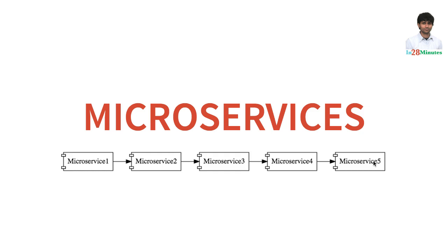He should be able to check out that this specific thing failed because of a specific thing at microservice 5, and he should be able to debug it fast and provide a solution. The thing with microservices architecture is the more you break it down, the more visibility you would need around what's happening in the background. Otherwise, you would spend a lot of time debugging problems.